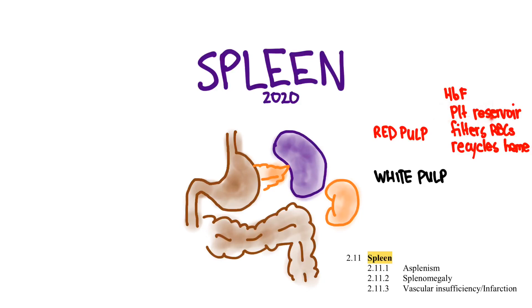It's a reservoir for platelets. About a cup full of platelets reside in the spleen, should we need them. It filters RBCs, especially ones that are damaged in some way, and it recycles heme. The white pulp basically acts like a giant lymph node with its immune function, and it also stores a whole bunch of white blood cells.